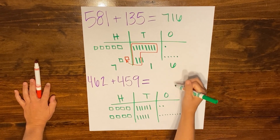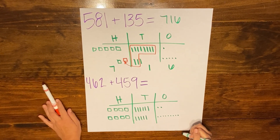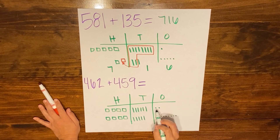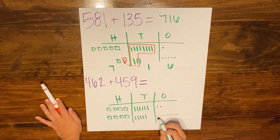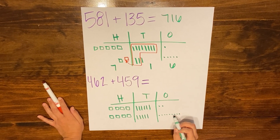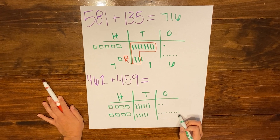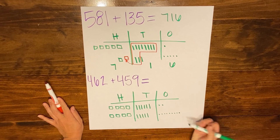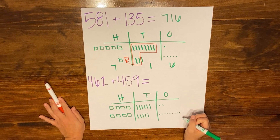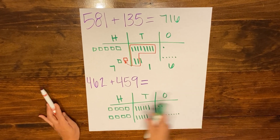Now I'm going to move to my ones column and add those up: 1, 2, 3, 4, 5, 6, 7, 8, 9, 10, 11. I cannot have eleven ones in my ones column, so I'm going to need to regroup.